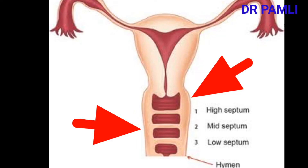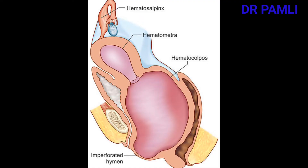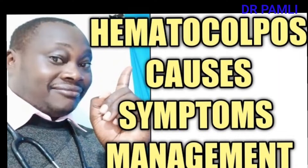Remember to differentiate hematometra from hematocolpus, which is blood filled in the vagina and is usually due to imperforate hymen. I have made a video about hematocolpus — kindly look at the description below to find more details.